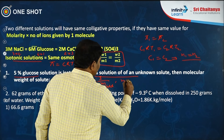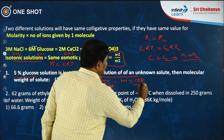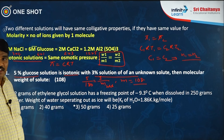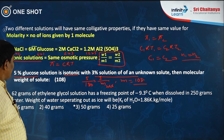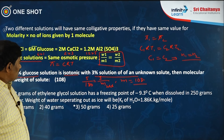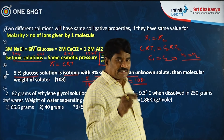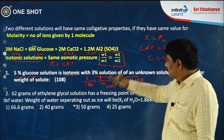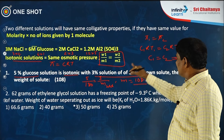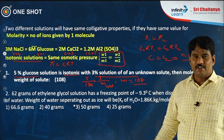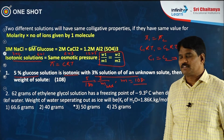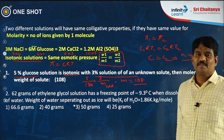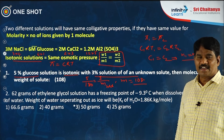The molecular weight comes out to 108. The same formula applies if a question says two solutions have the same lowering in vapor pressure instead of isotonic — since equal colligative properties implies the same condition W₁/M₁ = W₂/M₂.